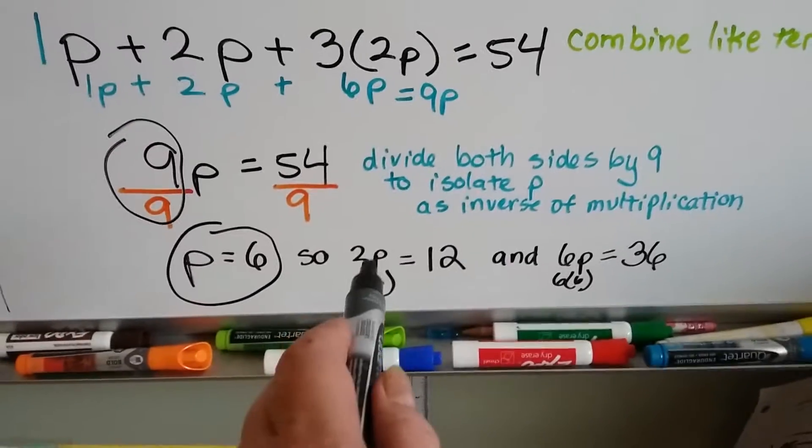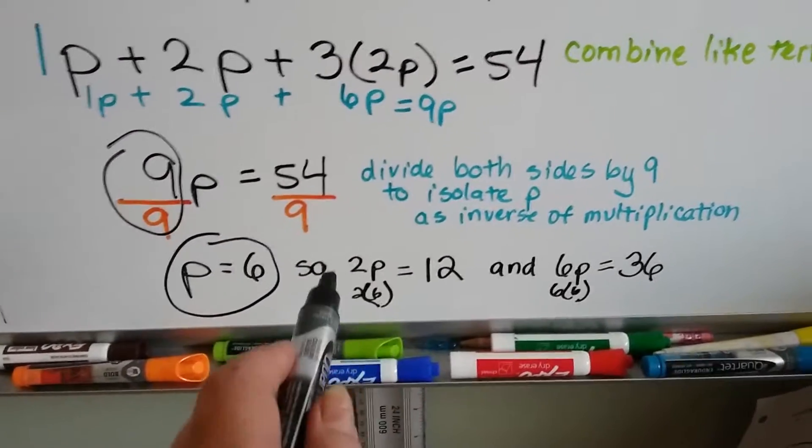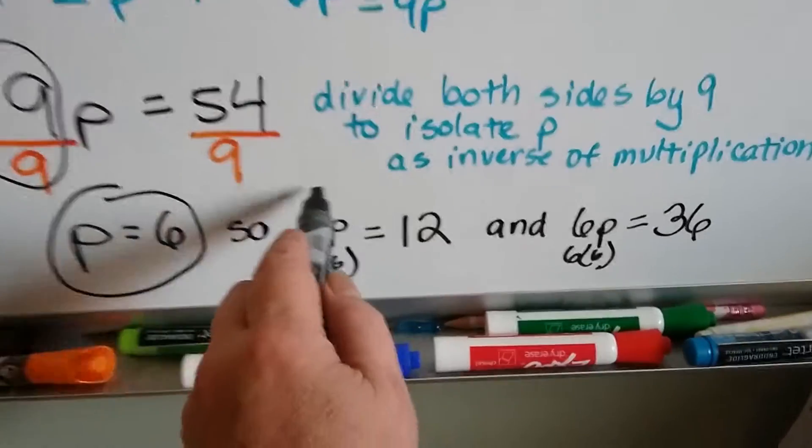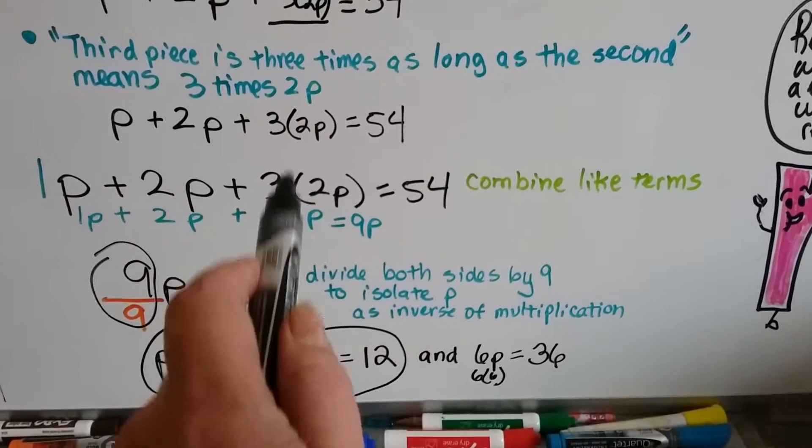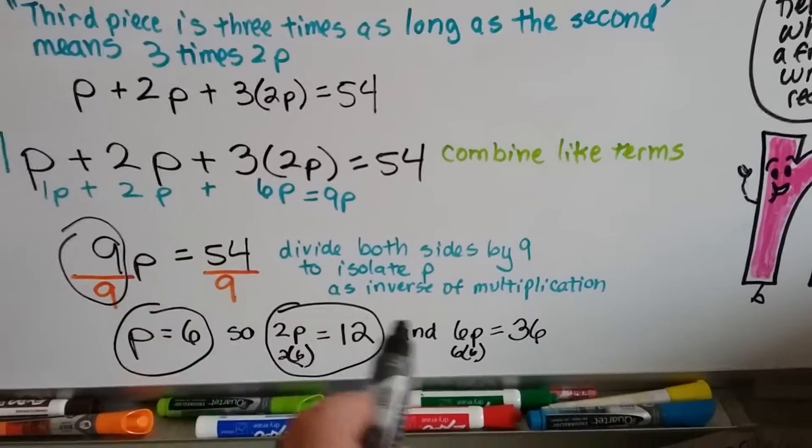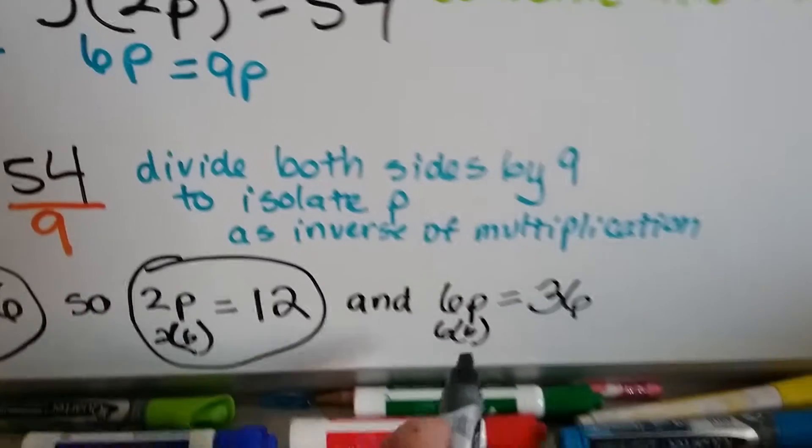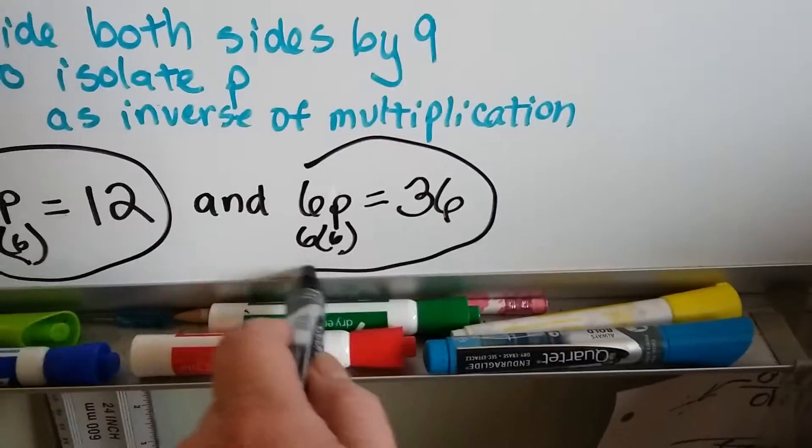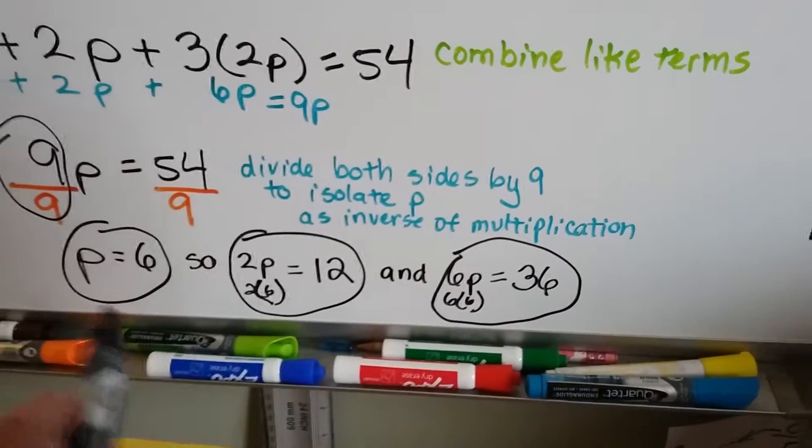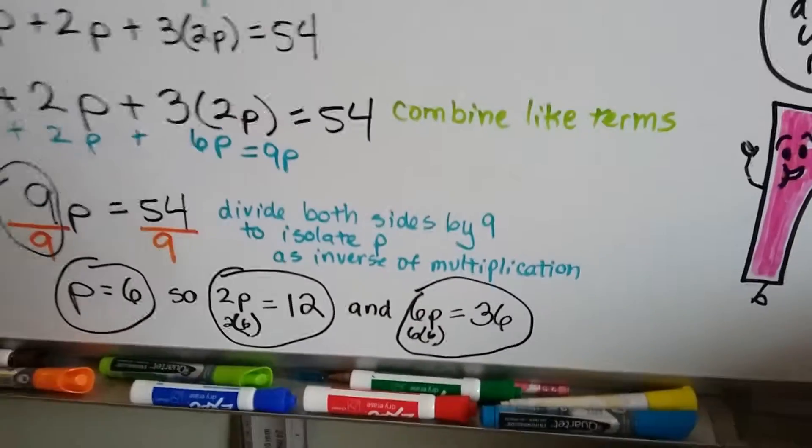Are we done? No, we're not, because we need to find the length of three pieces. So this is the length of the first piece. The second piece was 2P, that means two times six, so the second piece is twelve. The third piece was 6P—remember it was three times 2P, so it's 6P. Six times six is thirty-six. So now we know the lengths are six feet, twelve feet, and thirty-six feet.